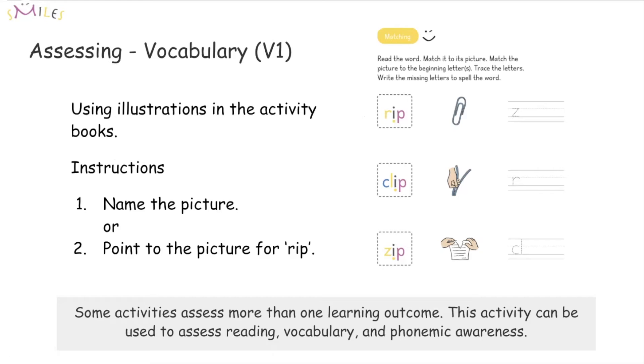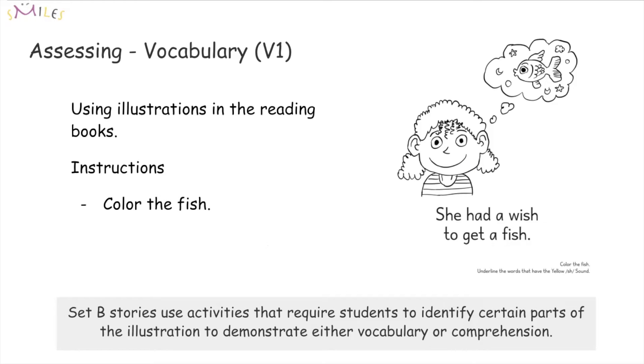Students can be asked to name the pictures or to point to the picture that best represents the given word. In Set B, other activities can be used to assess vocabulary. Each story contains instructions that require students to identify, through coloring, certain parts of an illustration in order to reinforce vocabulary.